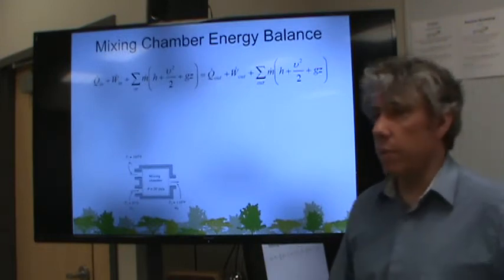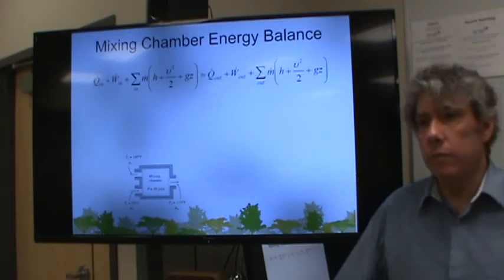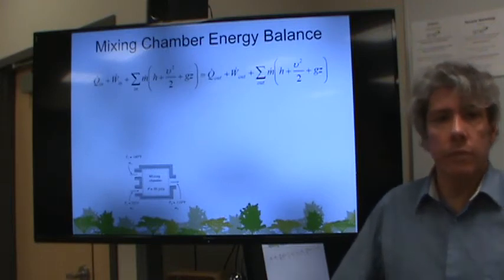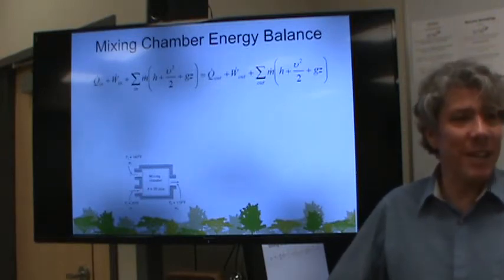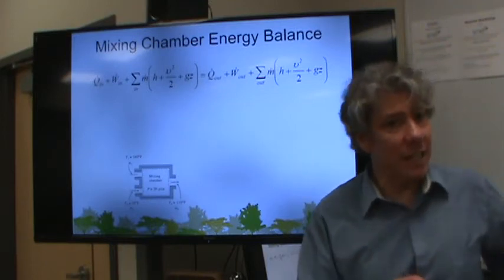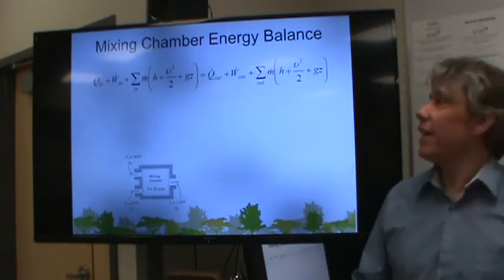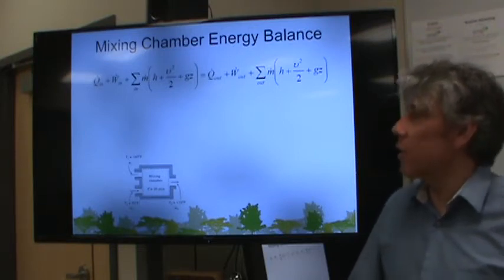How about a mixing chamber? What can I cross off here? Help me out. Potential energy. Potential energy, good. Again, the first victim is down. What else? Velocity. Kinetic energy, in other words. Not necessarily velocity, but kinetic energy. Okay, so potential and kinetic energies are gone. What else?